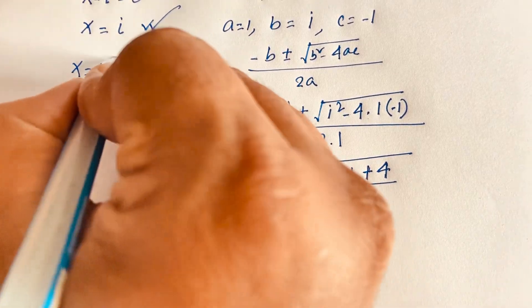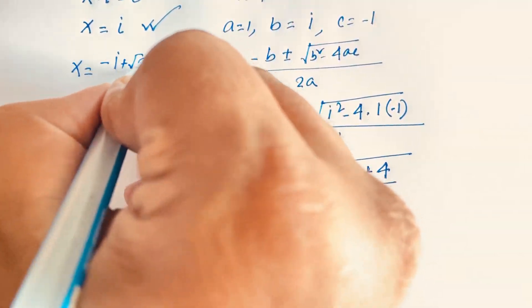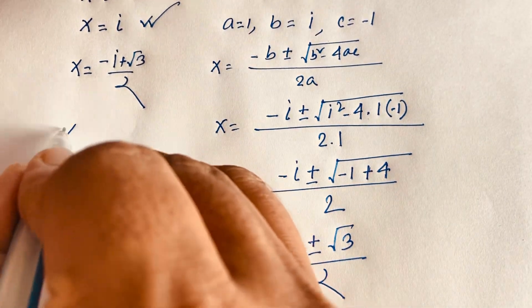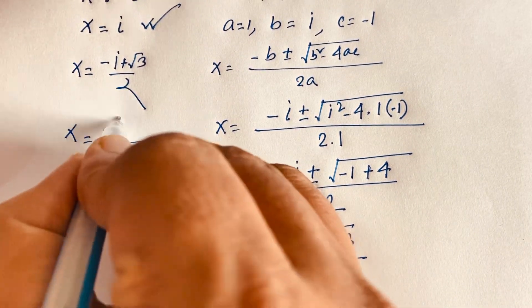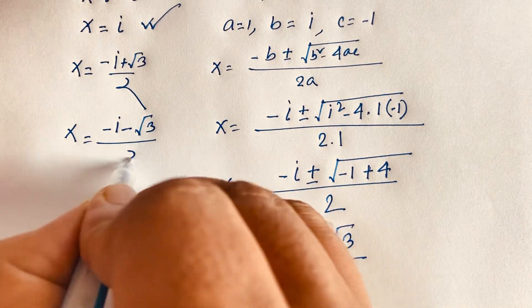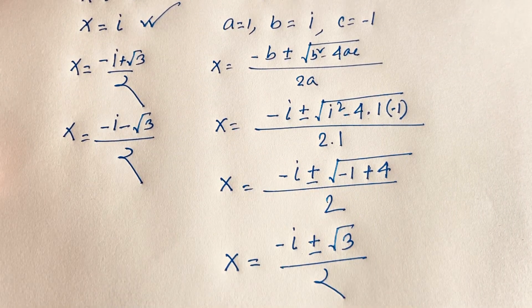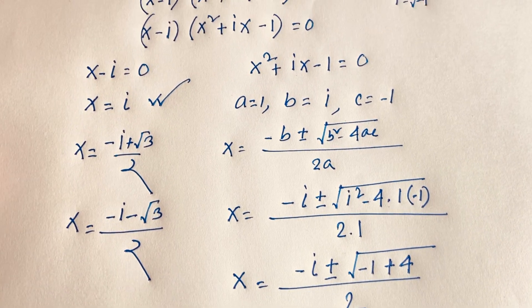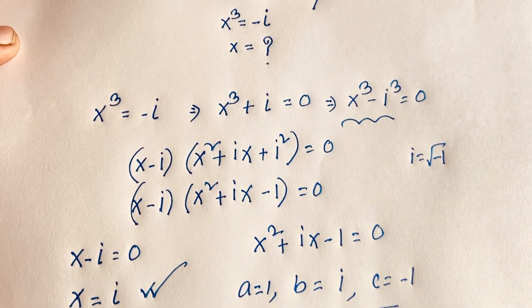So our final answers are: x equals i, and x equals negative i plus or minus square root of 3 over 2. Thank you, I hope you all enjoyed this video. Please subscribe to my channel for other interesting videos. Goodbye, take care!